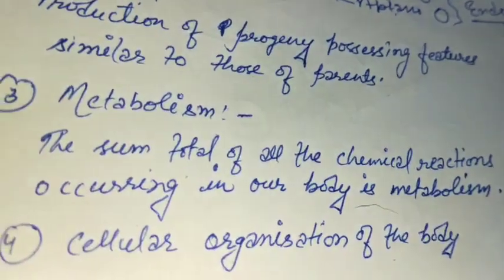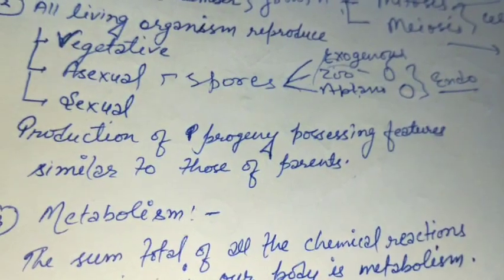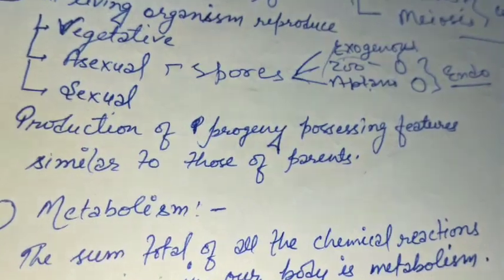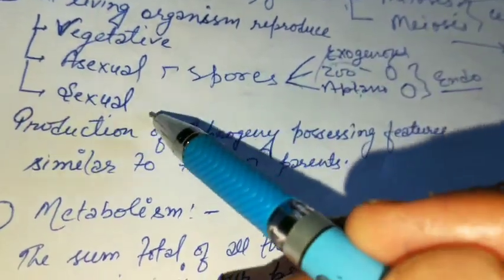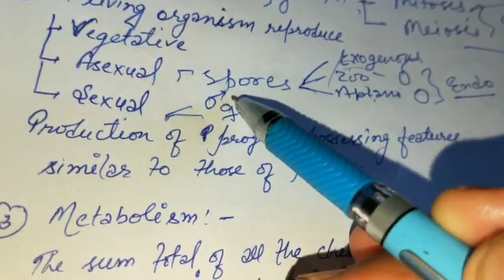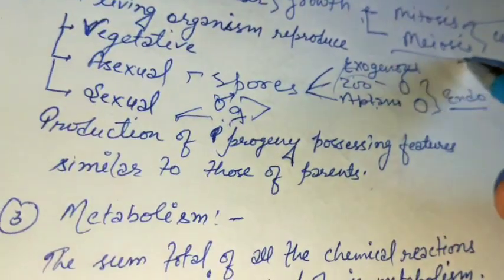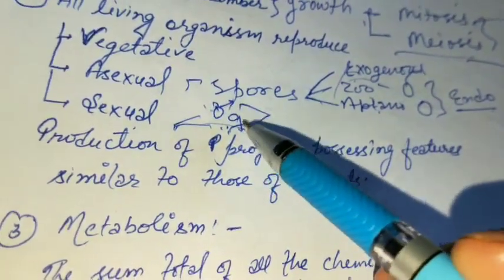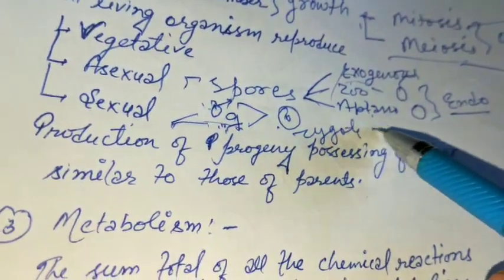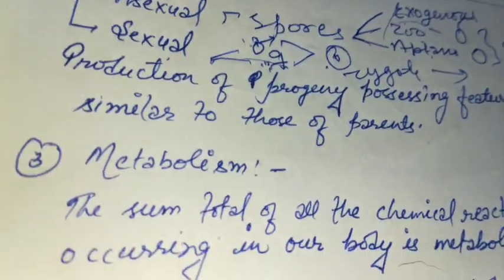The third and most common type of reproduction is sexual reproduction. During sexual reproduction we need two types of gametes: a male gamete and a female gamete. These gametes are produced by meiosis cell division, and after their production they fuse to form a diploid zygote. From this zygote, a new individual forms by mitosis division.